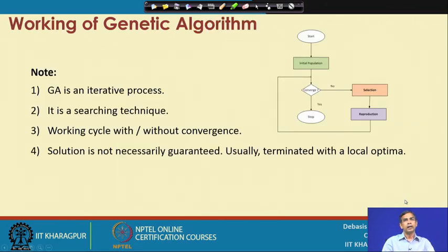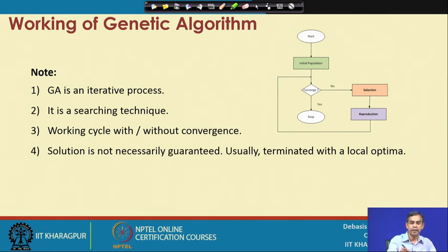The genetic algorithm works as an iterative process in which it pursues the searching for the best solution, and this working cycle is continued with certain convergence criteria — that is, whether to continue or stop the search. One important thing is that the solution it ultimately gives is not necessarily guaranteed to be the global optimum; it can give a near-optimum solution.